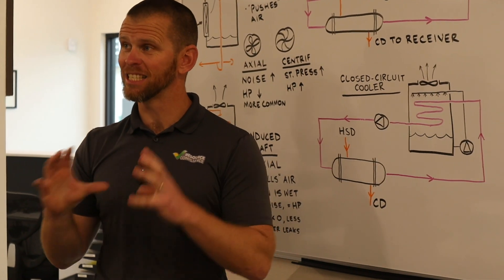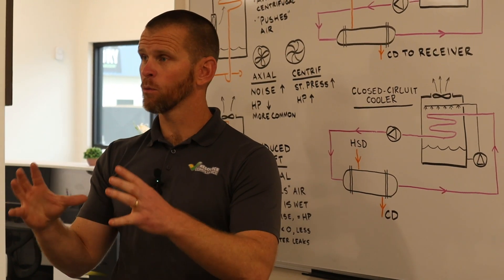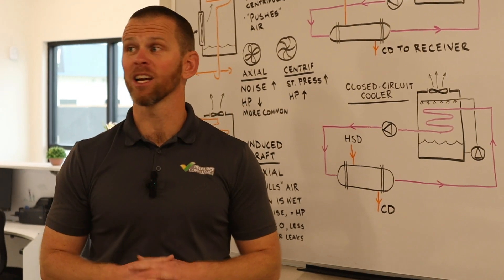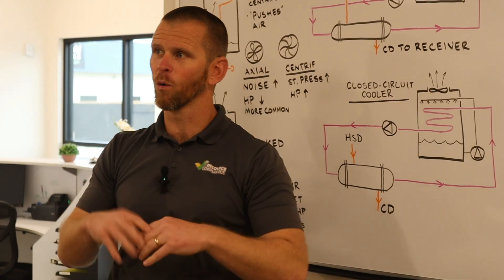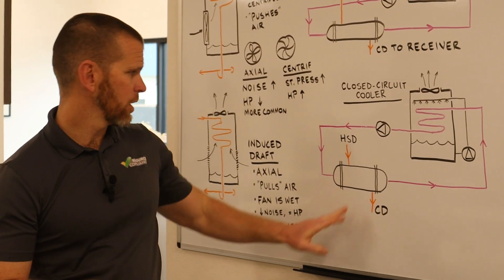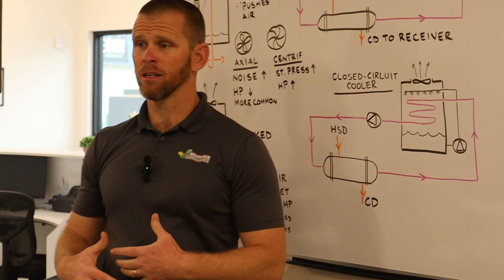You need to make sure that when you design the location where this is going to be at the plant, that there's room to physically remove the tube bundle. Because if you don't leave room, if you pack it into a corner, you're never going to be able to get access to that.